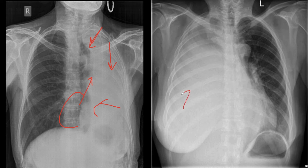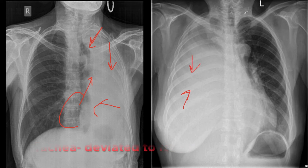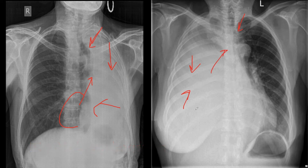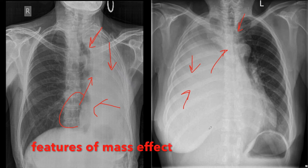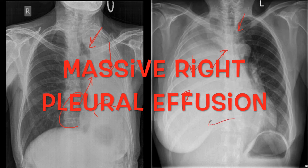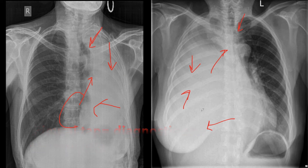In the second image, we can appreciate the following things: the right hemithorax is whiteout; the trachea is slightly deviated towards the left side due to mass effect from the opacity; there are no air bronchograms in the opacity. So, with these features of mass effect, we can say this is a case of massive right-sided pleural effusion. The next step is to perform pleural tapping, which can be both diagnostic and therapeutic.